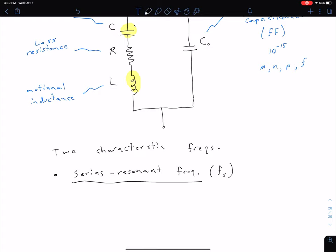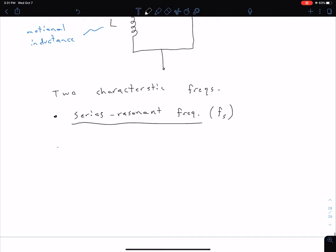Our second one is our parallel resonant frequency. With our parallel resonant frequency, we basically say our left branch can be approximated as an inductor. That is going to be canceling out with our C0, our crystal shunt capacitance. So this parallel resonant frequency is F sub P.